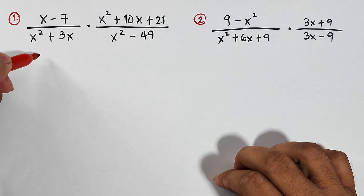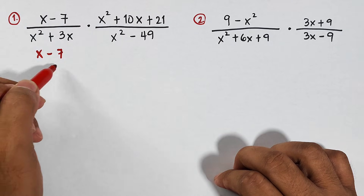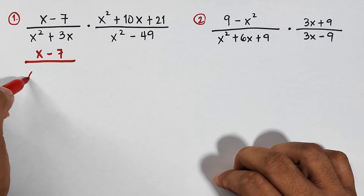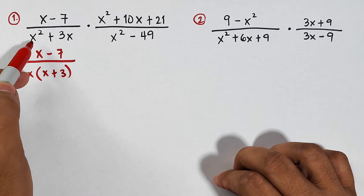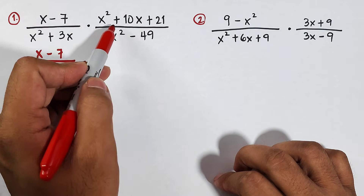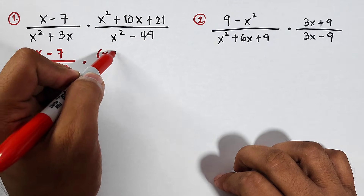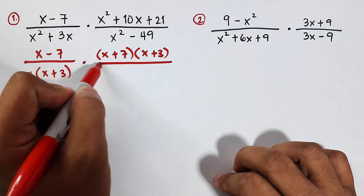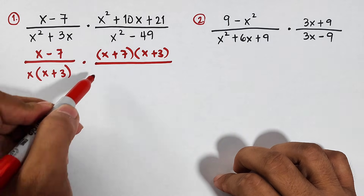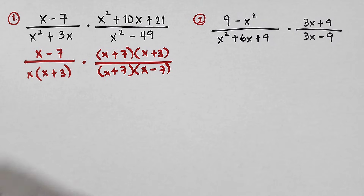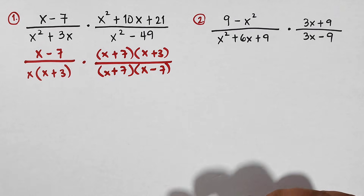Here, x minus 7 we can copy as x minus 7. Our denominator x squared plus 3x can be factored out as x times x plus 3 by common monomial factoring. Then times. For the numerator of the second rational expression, we can factor out x squared plus 10x plus 21 into x plus 7 times x plus 3, over x squared minus 49, which can be factored out as x plus 7 times x minus 7. As you can see, we apply different methods on how to factor out polynomials, and that is the basic thing we need to remember before dealing with multiplying rational expressions.